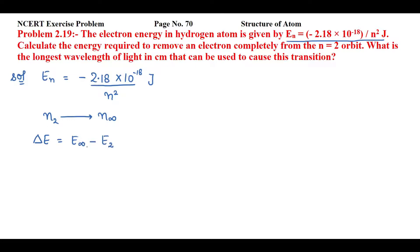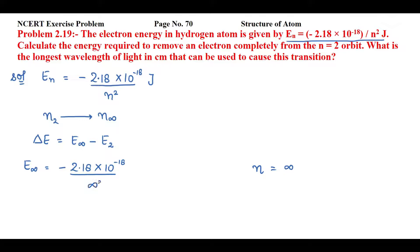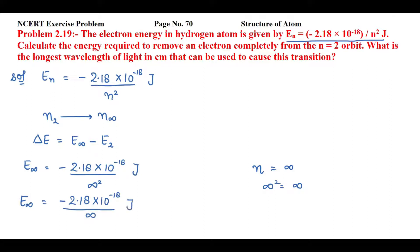First, we will find the value of energy of the infinite orbit. For this, we use the relation: E infinity equal to minus 2.18 into 10 raised to power minus 18 by n square. We take n equal to infinity, so the denominator becomes infinity squared, which is infinity. If you divide something by infinity, it equals zero. So E infinity equals zero.